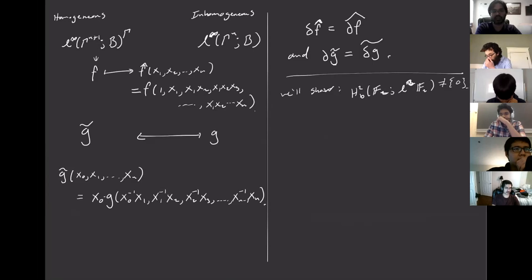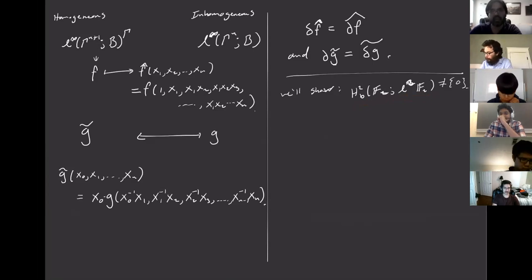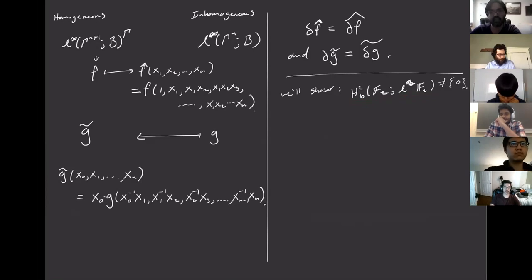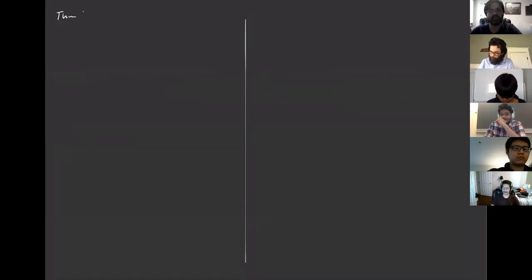Today we will prove that the bounded two-cohomology of a free group with values in its left regular representation is non-trivial. To do that, first let me show you a proof that bounded two-cohomology with trivial coefficients is also non-trivial. This is a result of Brooks from 1978.